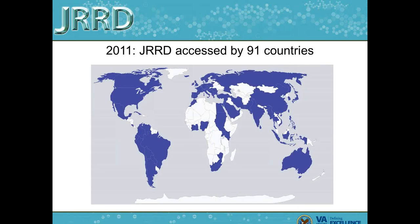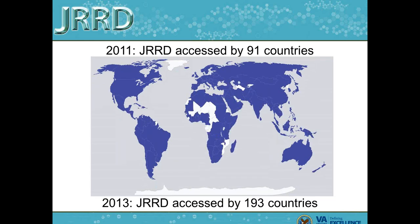Back in 2011, when we were first able to track and collect location data on our website's visitors, we were being accessed by 91 different countries. And now, at my last check, we're being accessed by 193 different countries.